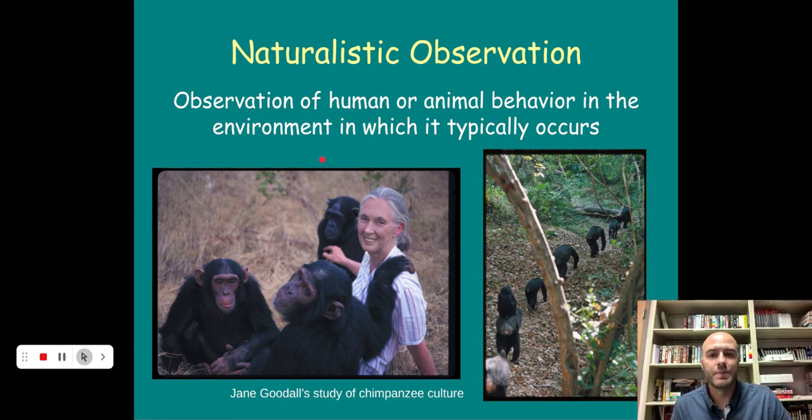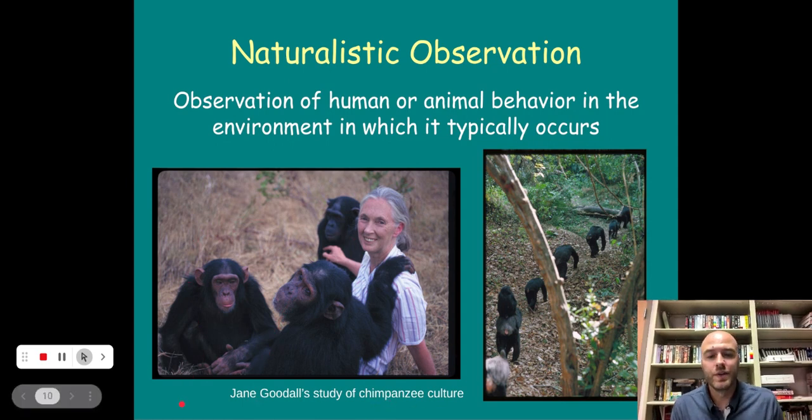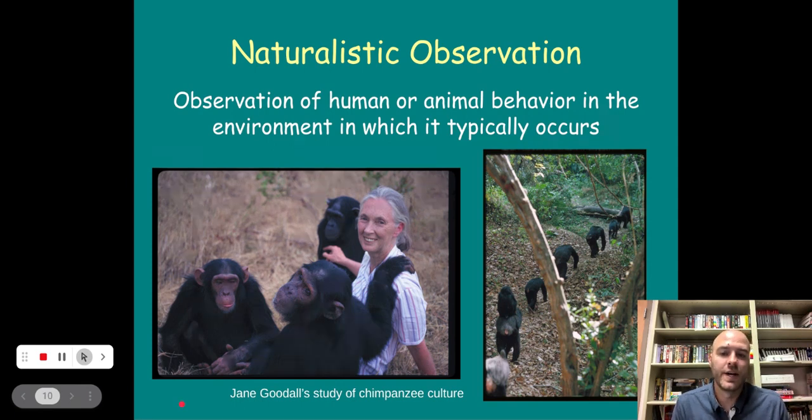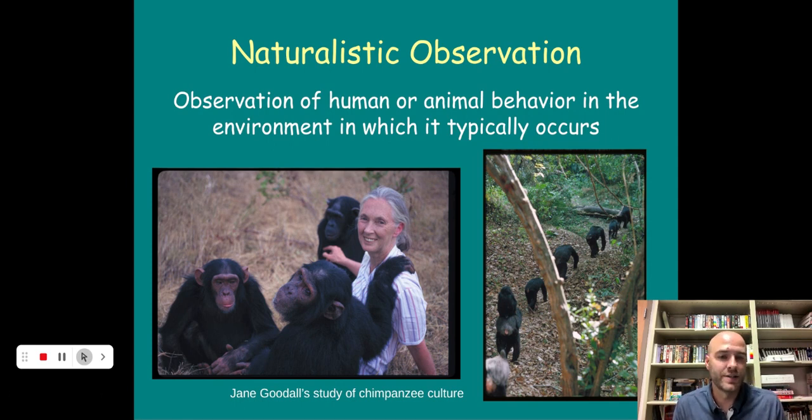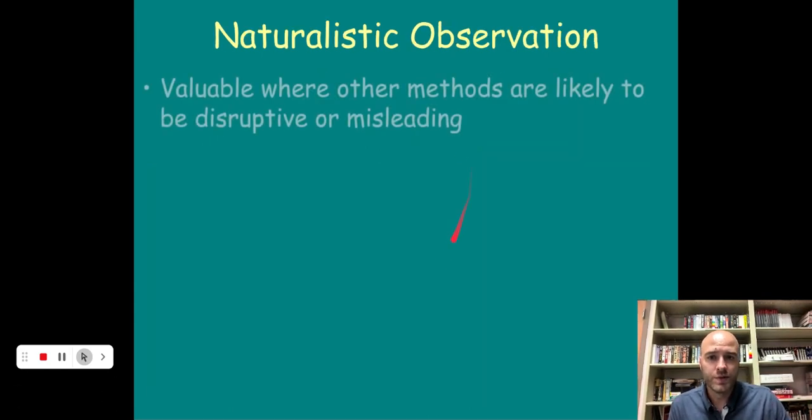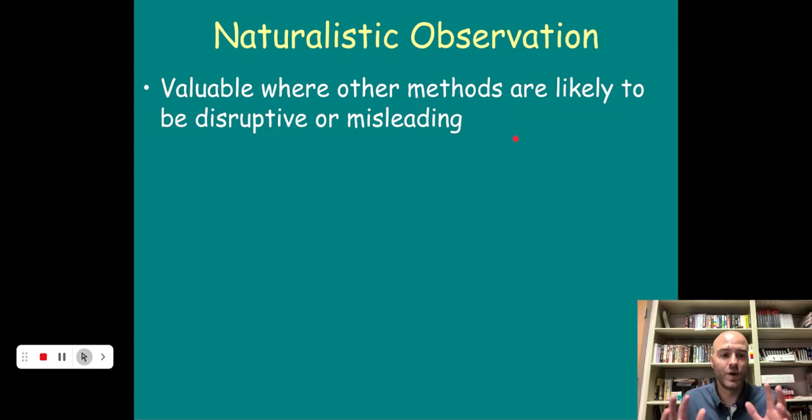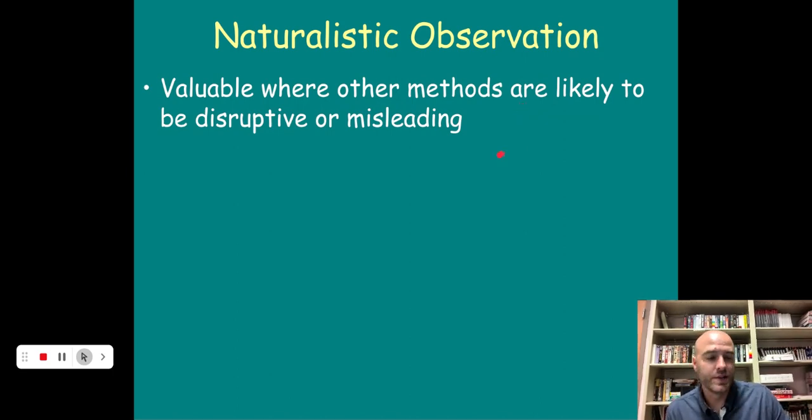So our second type of descriptive research method is a naturalistic observation. This is an observation of human or animal behavior in the environment in which it typically occurs. One of the most famous being Jane Goodall's study of chimpanzee culture where she was able to observe them in their natural environment and learn a heck of a lot about chimpanzee culture, primate interaction, and how they behave out in the real world.